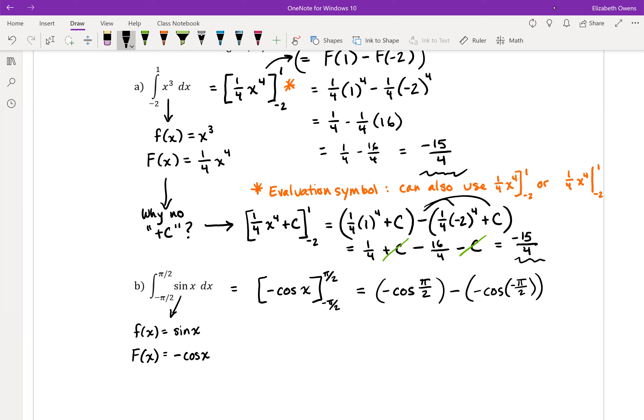In this case, think about your trig, pi over 2 and negative pi over 2 both happen to be places where the cosine equals zero. So we just have zero minus zero, and we're going to get zero overall for this integral.